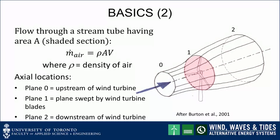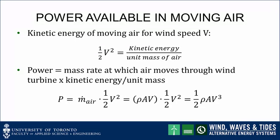Now let's consider the air at the stream tube inlet, plane 0. The kinetic energy of moving air for wind speed v is given by one-half v squared. Using this, we can compute the power as being equal to the mass rate at which air moves to the wind turbine, times its kinetic energy per unit mass. Substituting mass flow rate rho A v and kinetic energy per unit mass one-half v squared gives us one-half rho A v cubed as the power available in the moving air.